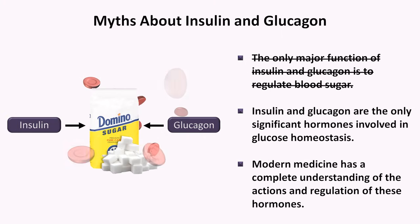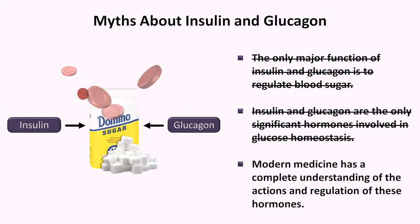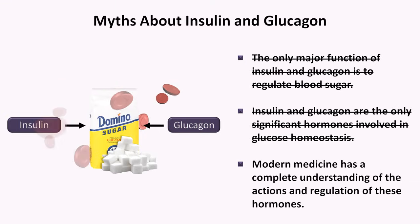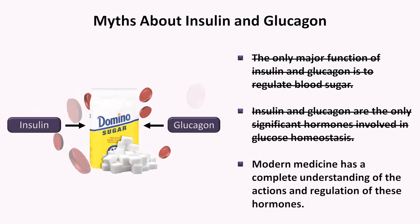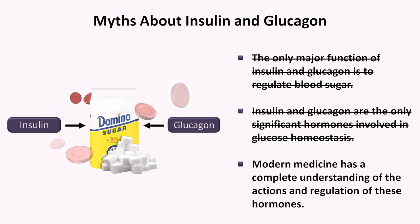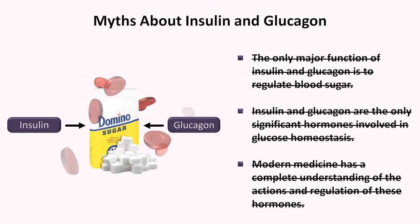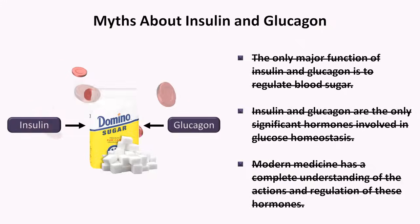Insulin and glucagon do much more than regulate blood sugar. There are many other hormones involved in the regulation of glucose — unequivocally seven other hormones with a clinically relevant role in glucose homeostasis, and quite likely more whose role is waiting to be further elucidated and confirmed. While we understand much about insulin and glucagon, modern medicine is gaining new insight into their very complex physiology every year.